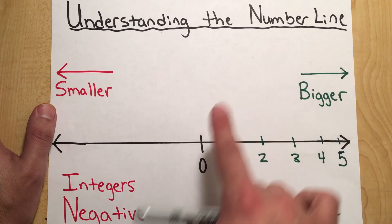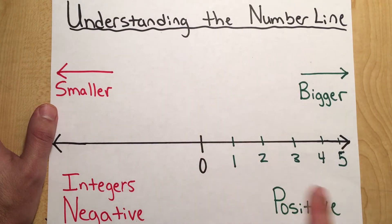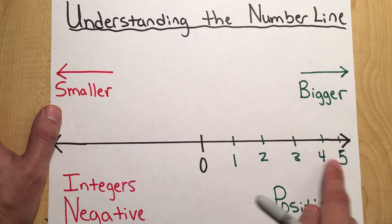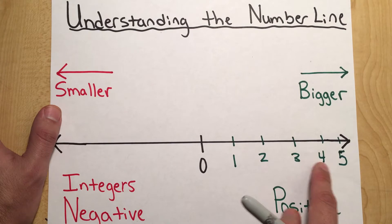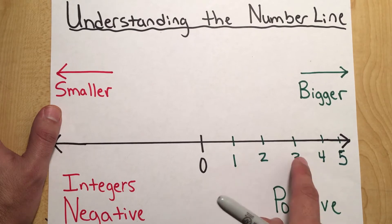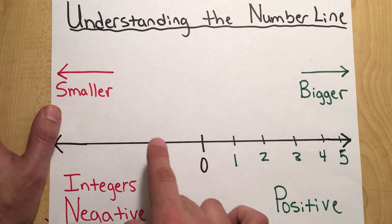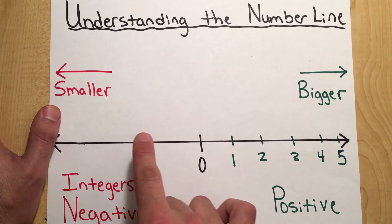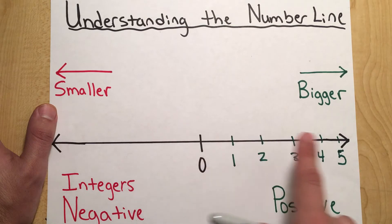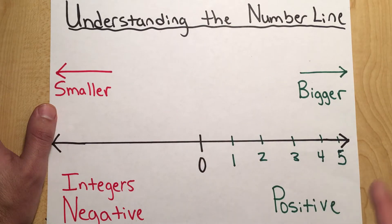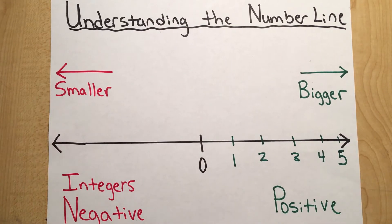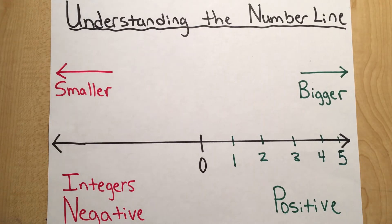Most of us don't have a hard time understanding this. We understand that five is bigger than one, four is bigger than one, three is bigger than zero. So the further our numbers move to the right, the bigger they get. However, when we start talking about integers, we get a little bit confused because integers work a little bit differently.